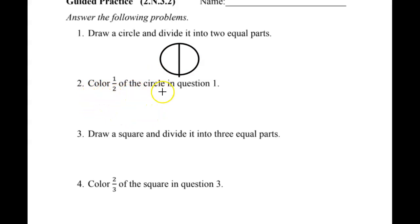Color one-half of the circle in question one. So go ahead and color one-half of the circle that you drew. That was easy. You just colored one part of it.